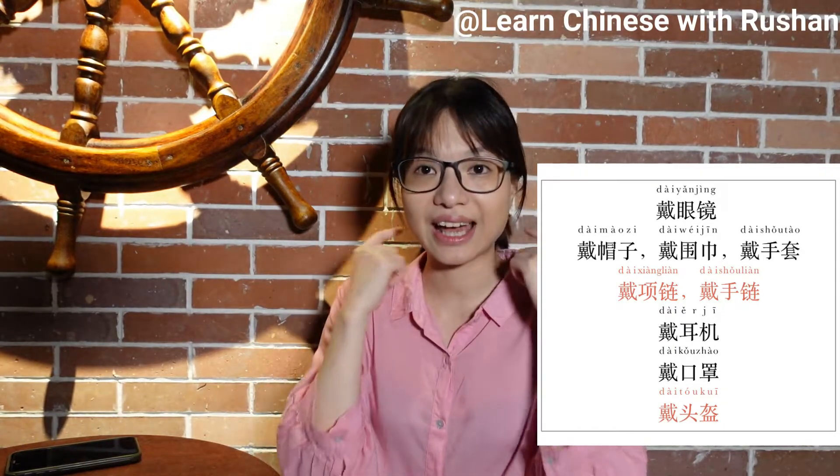With 戴: 戴眼鏡. When we are cold — 冷的時候 — 戴帽子, 戴圍巾, 戴手套. And all kinds of accessories: 戴項鏈 (necklace), 戴手鏈 (bracelets), 戴手錶 (wear a watch), 戴耳機 (earphones — very useful one), 戴口罩 (wearing a mask — also very useful for now), and even wear a helmet — 戴頭盔. These are most of the objects we can see in real life.